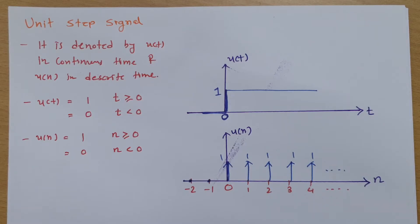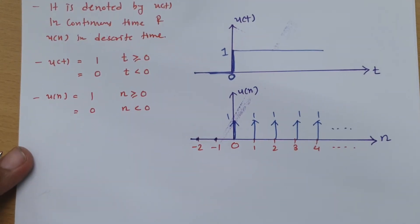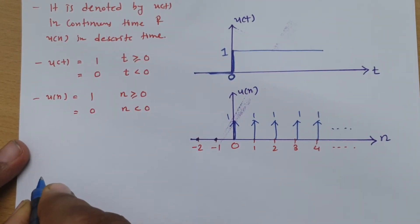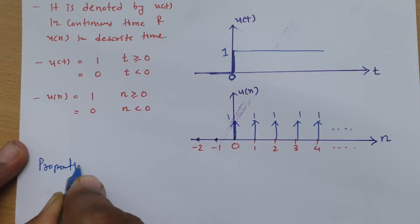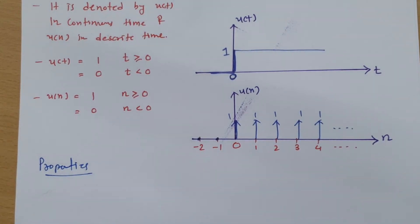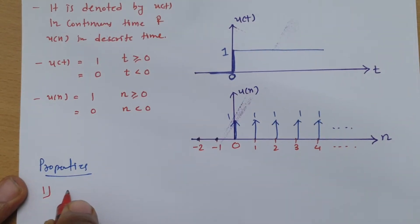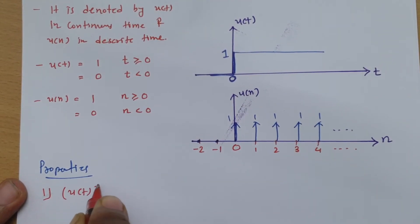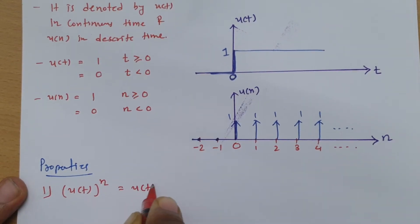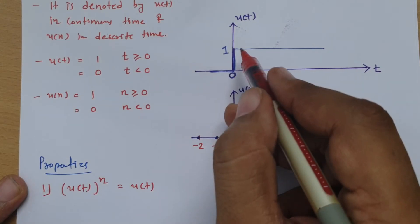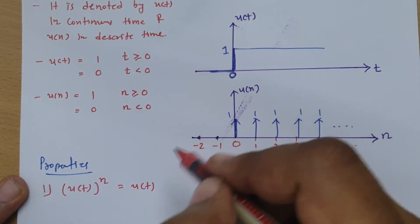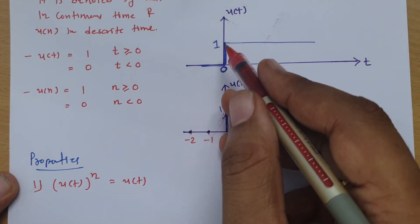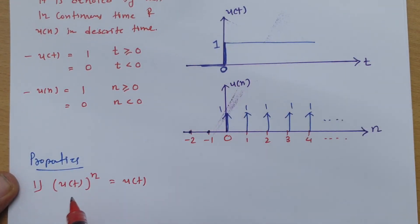Now let's discuss a few essential properties. The first property states that u(t) raised to the power n equals u(t). The reason is that the value of u(t) is 1 for t greater than or equal to 0, so 1 to the power n is still 1, meaning u(t)^n = u(t).